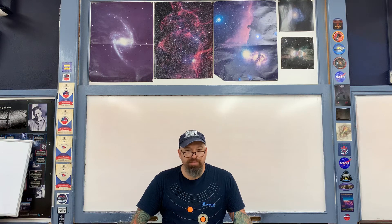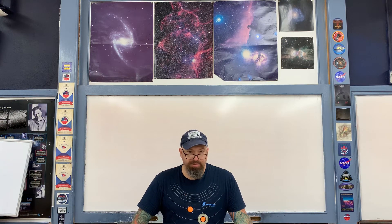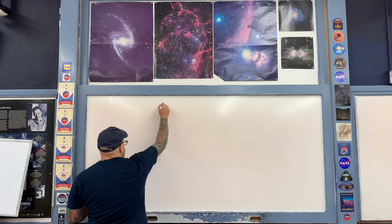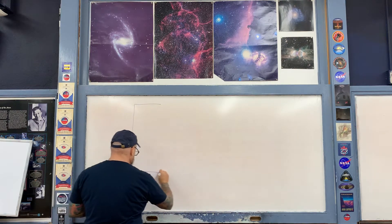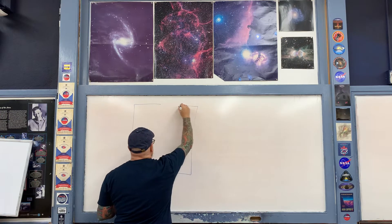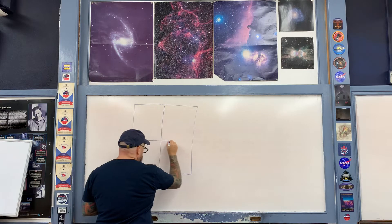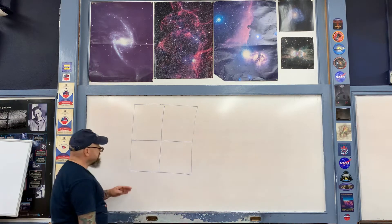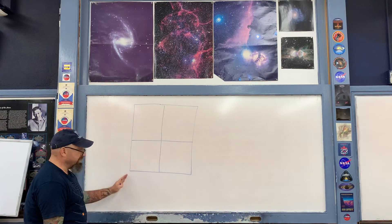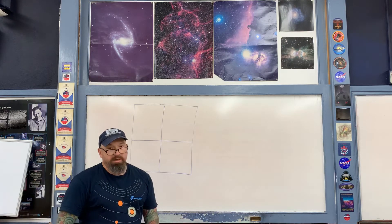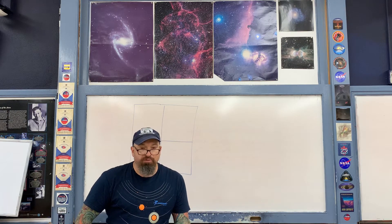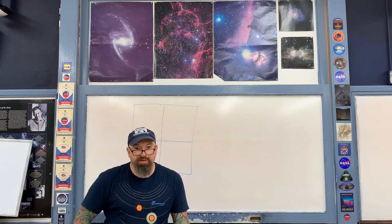First, take four blank pieces of paper — use printer paper, not notebook paper — and tape them together so that the long side runs horizontally. At the point of intersection of all four pieces of paper, we define that location as the position of the sun.